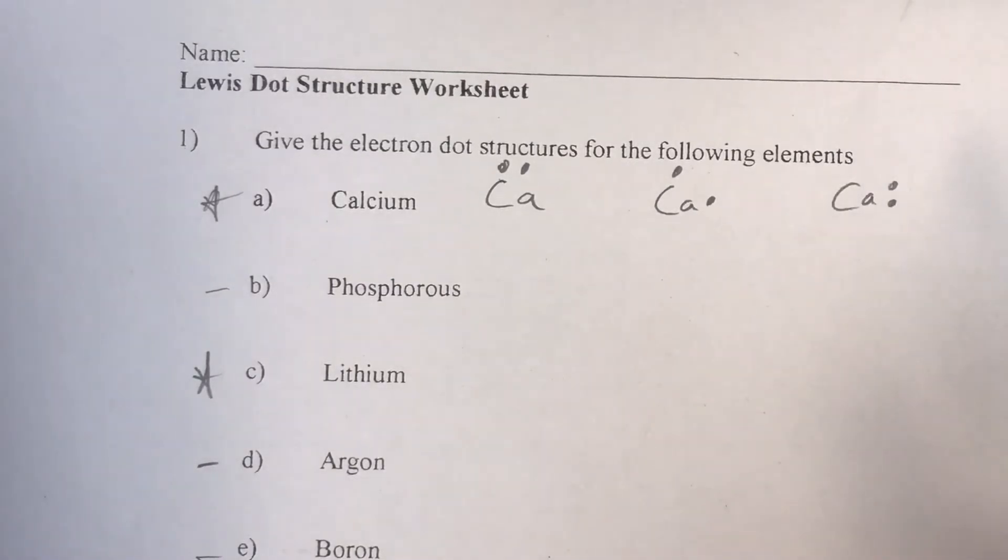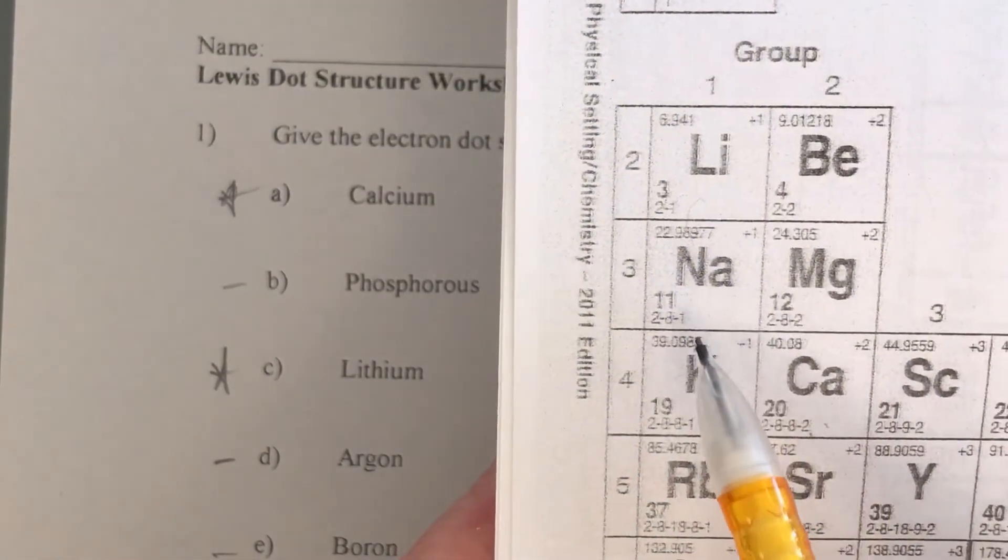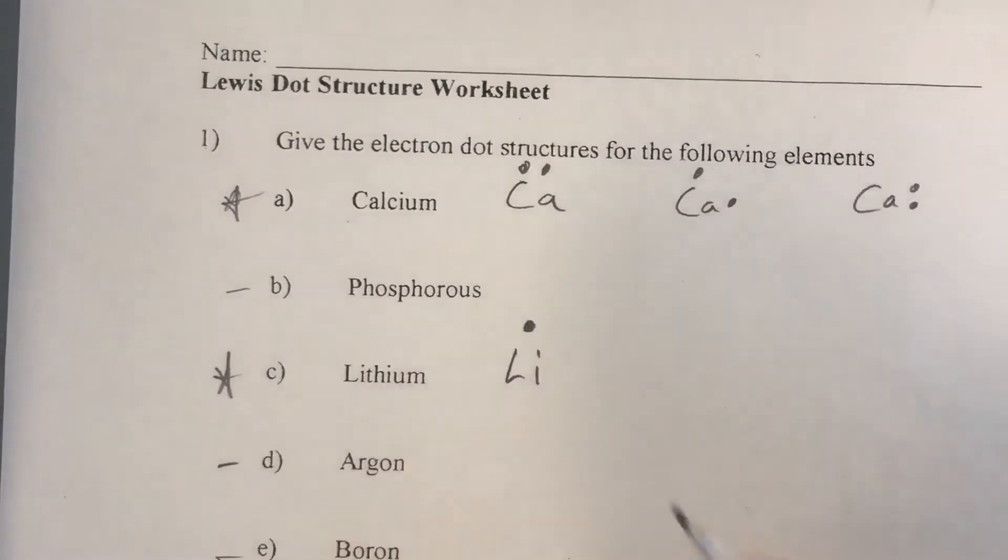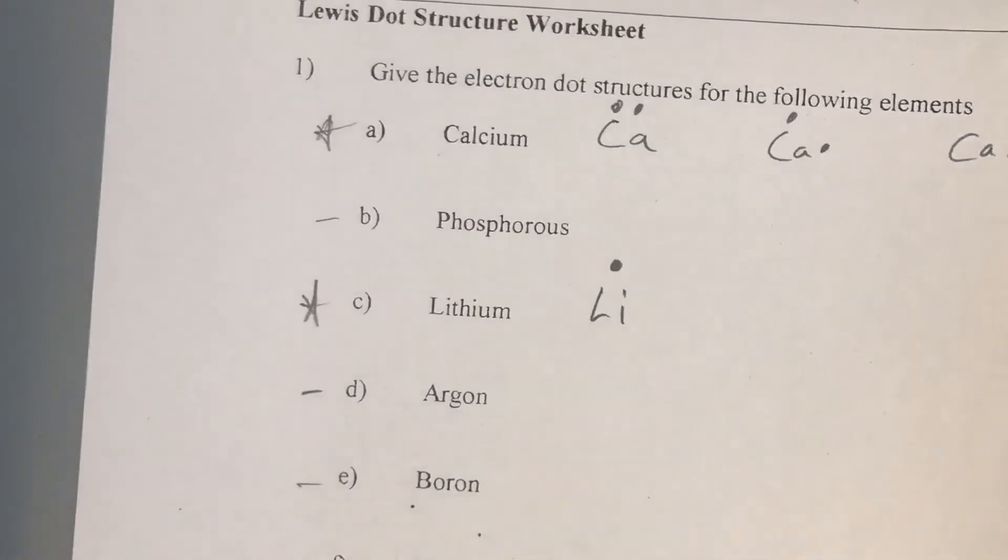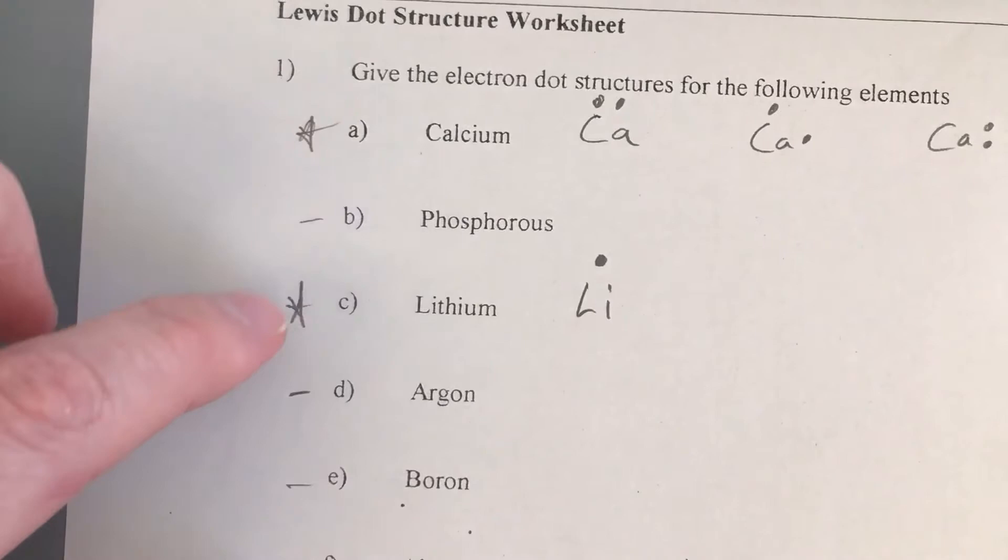For the sake of what we're looking at, we're only focused on the individual element. We usually start by filling in the top two first, then we work our way around. Lithium, our next one, is over in group one so it only has one—so we have a symbol Li and then just one dot, pretty simple.